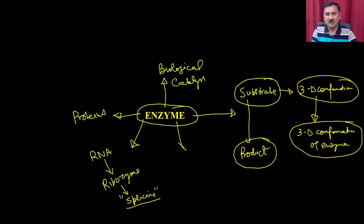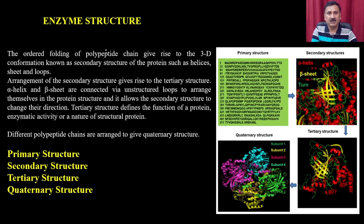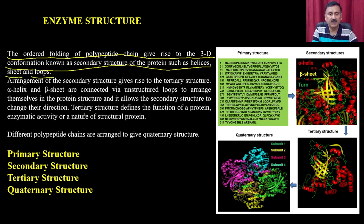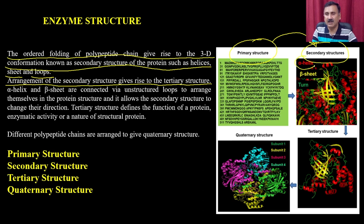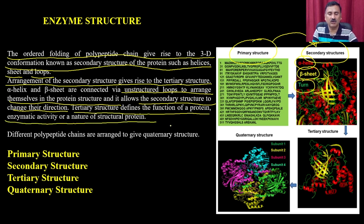As far as enzyme structure is concerned, enzymes have a detailed structure. The enzyme structure is the ordered folding of the polypeptide chain that gives rise to 3D conformations known as the secondary structure of the protein, such as the helix, beta sheets, and loops. The arrangement of the secondary structure gives rise to the tertiary structure.